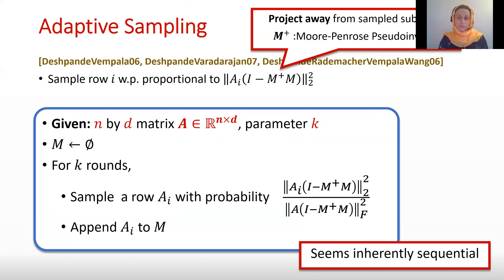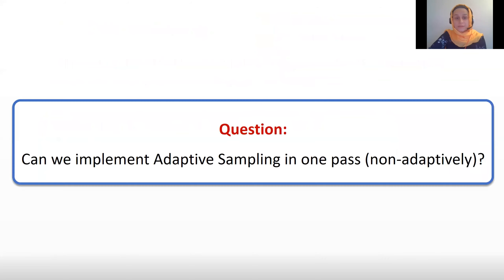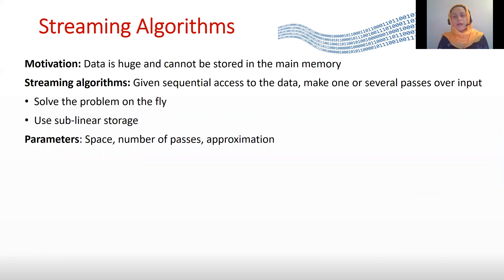This process seems inherently sequential because we sample one row, project away from it, sample another, and continue. In this work we would like to see whether it is possible to implement adaptive sampling in a non-adaptive fashion — basically, in one passive streaming pass. Streaming algorithms are one model to handle large amounts of data where we don't have sufficient memory to store all the input. The data is stored elsewhere, we can only make sequential passes over it, and we would like to use a sublinear amount of storage while making only one or a few passes.